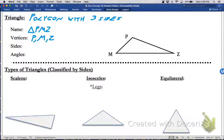The sides of the triangle are these three right here. To name those sides, we name them as segments. So we have segment PM as a side of the triangle, as is segment PZ, and finally, segment MZ.